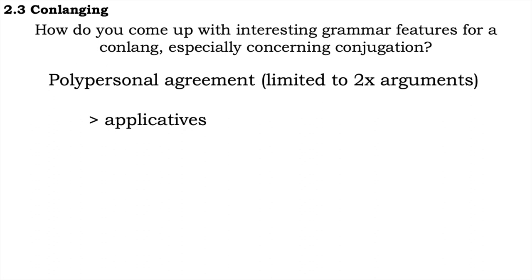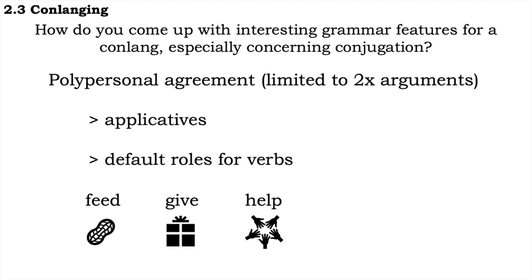First was the introduction of applicatives to promote certain arguments to the direct object slot, like locations and instrumentals. The second thing that happened was my thinking very hard about what the default roles of verbs would be, where I came up with a rule that if a verb of three arguments requires two of those arguments to be animate entities, then those two will take the subject and direct object slots. Let's look at the verbs feed, give, help, write, and bake, with three arguments each.